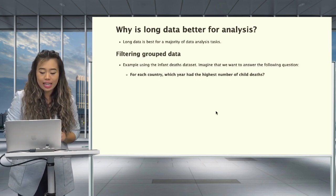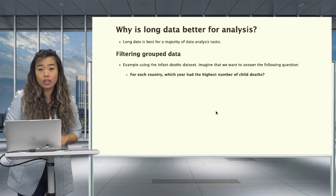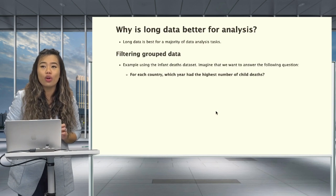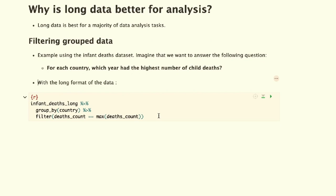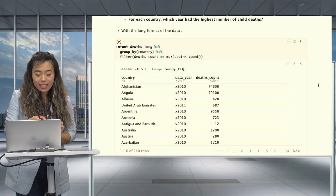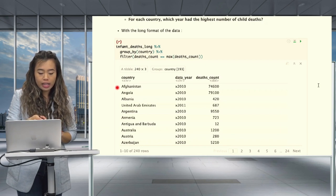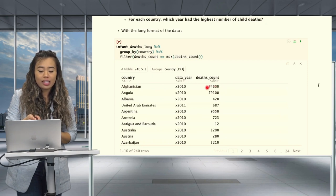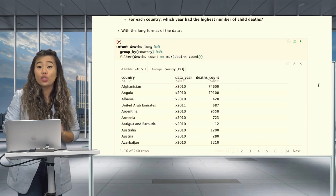Using the infant_deaths data set as an example, imagine we want to answer the following question: for each country, in which year had the highest number of child deaths? With a long format, all we need to do is indicate the data set, grouped by country, and filter by deaths_count equal to max(deaths_count). From the output, we can easily see that for each country — for example, Afghanistan had its highest number of infant deaths in 2010, UAE in 2011, Armenia in 2010, and so on.